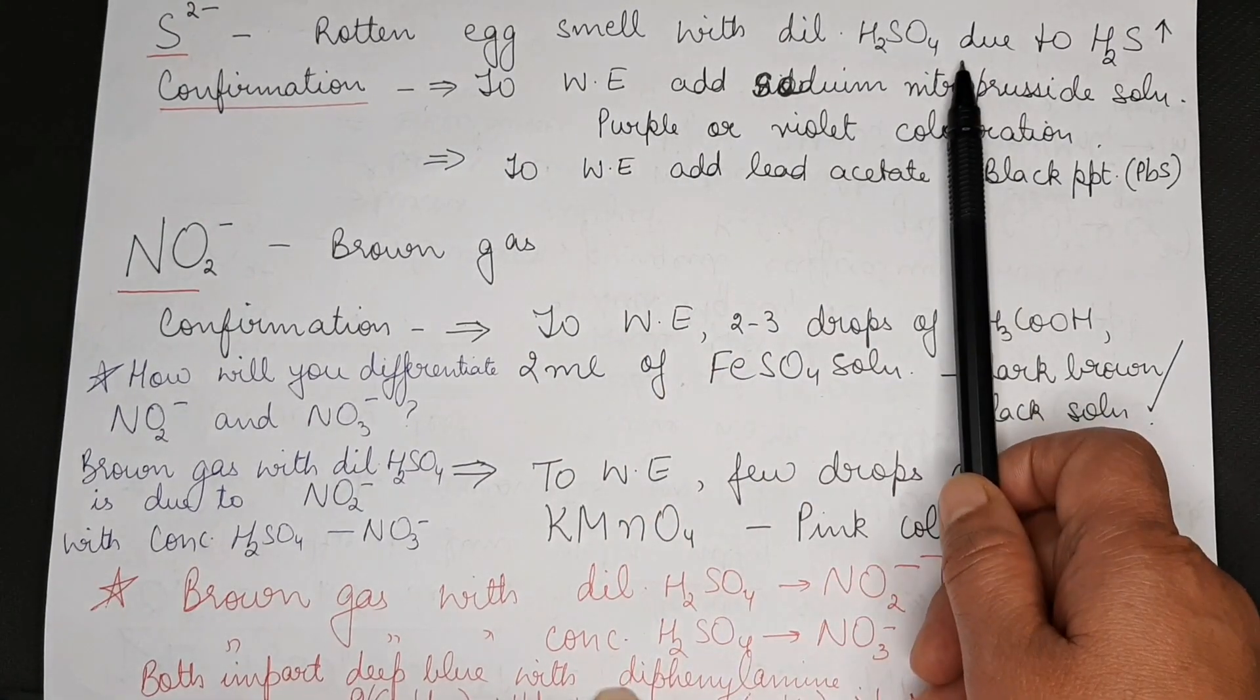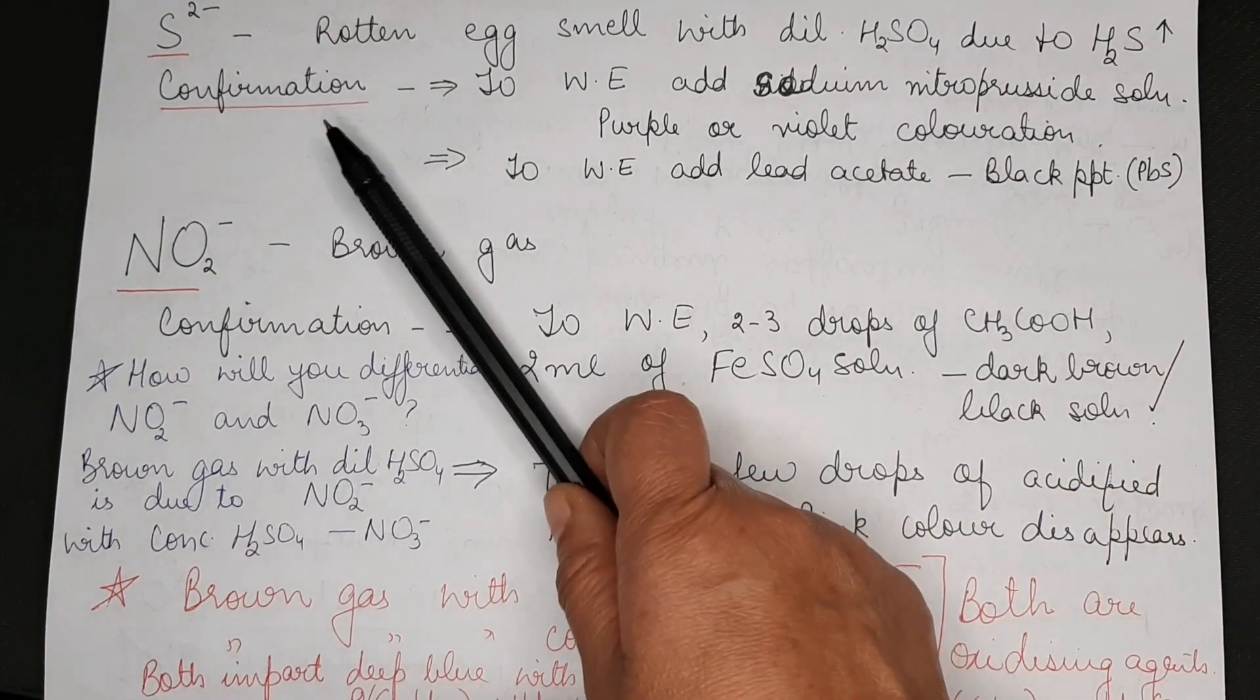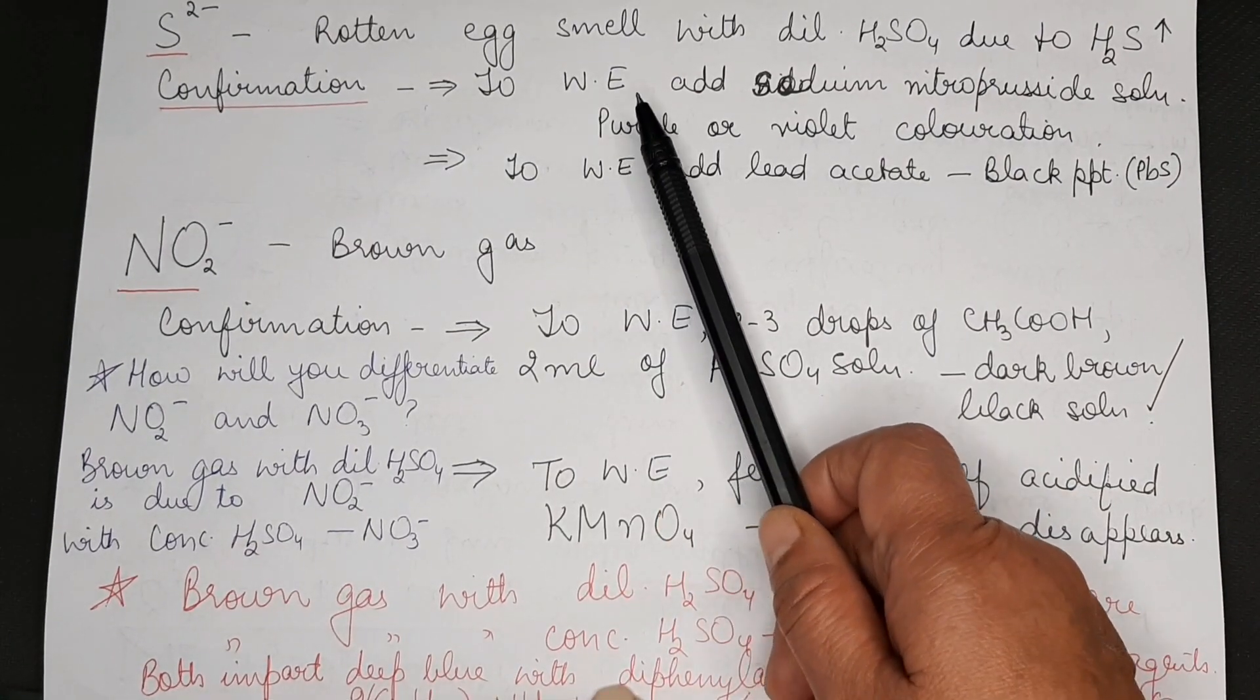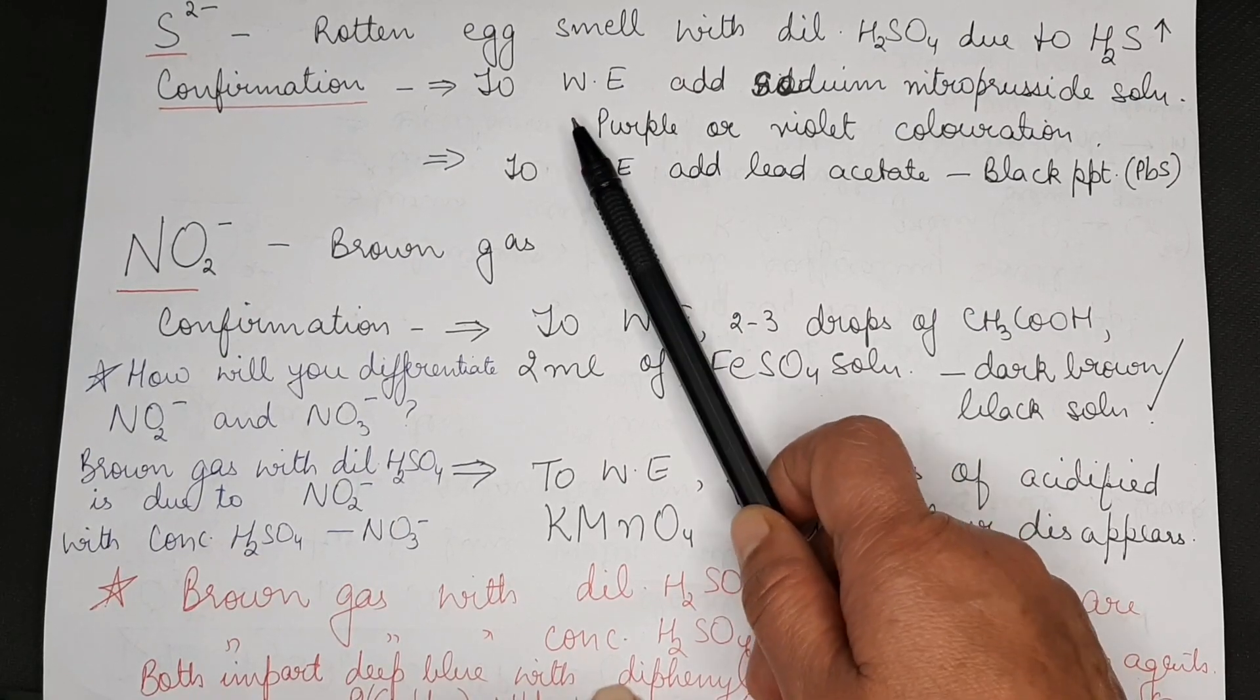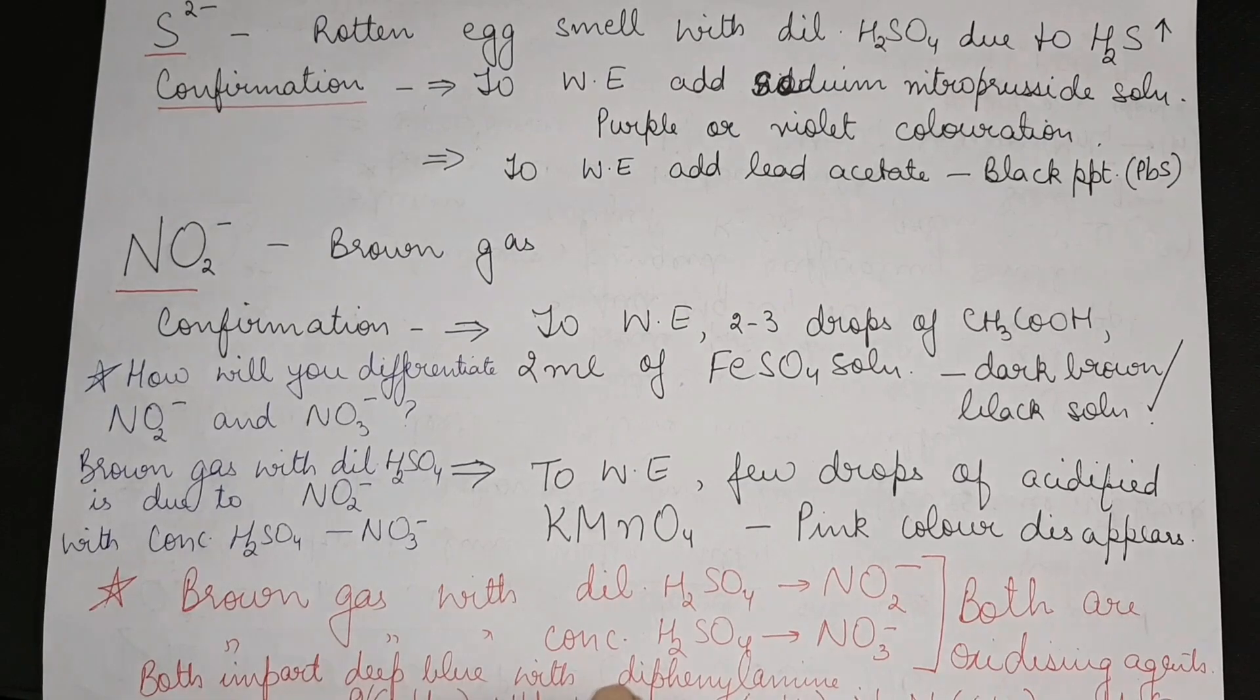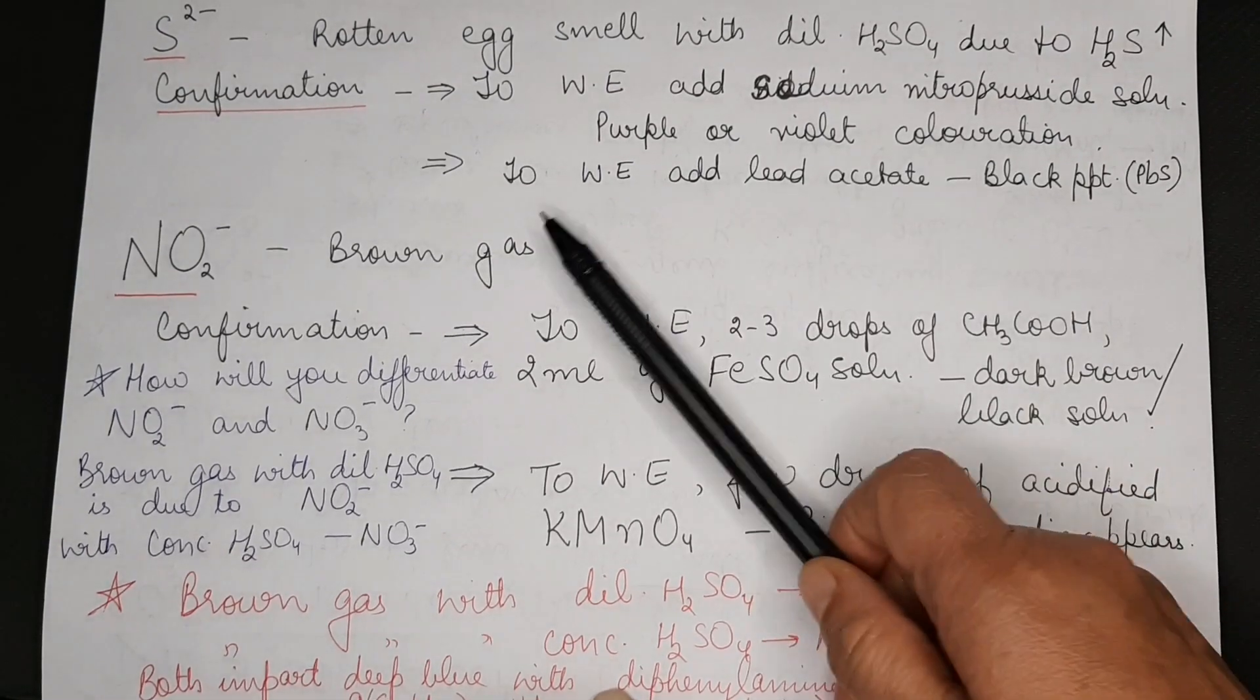With dilute sulfuric acid, due to liberation of H2S, it gives rotten egg smell. Confirmation is done with water extract. Add sodium nitroprusside: purple or violet coloration. If you add lead acetate, it gives a black precipitate.